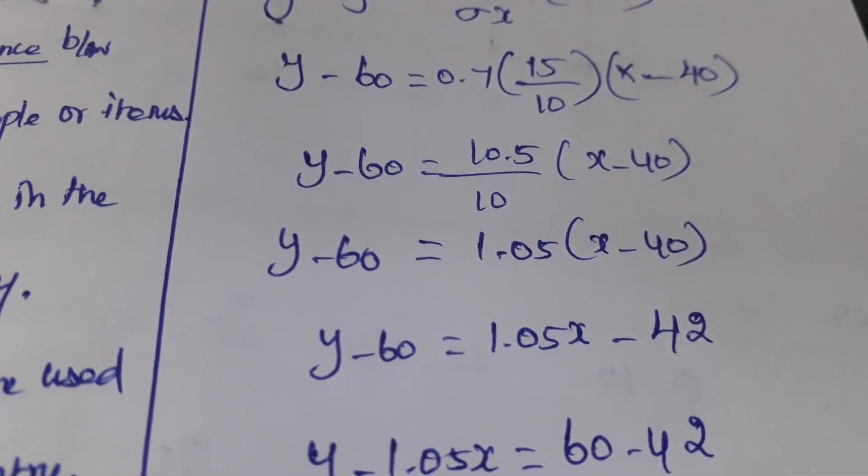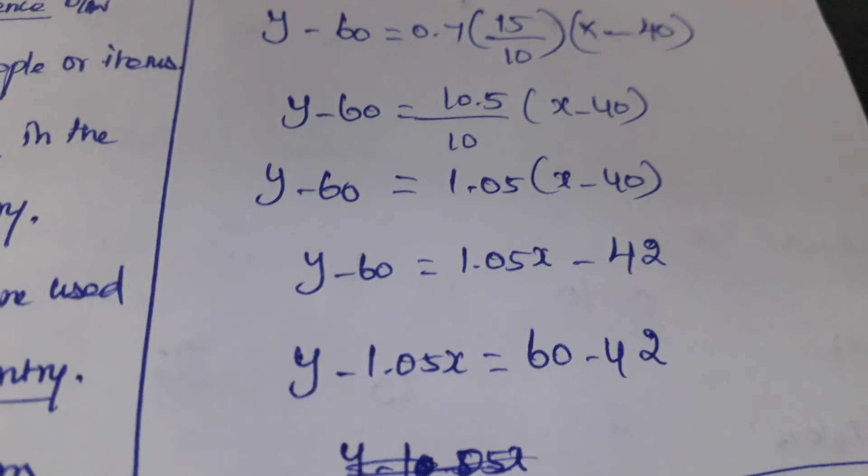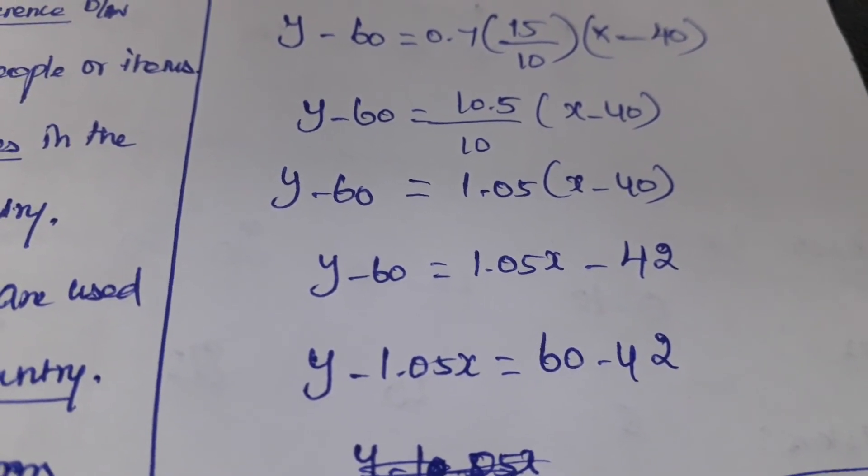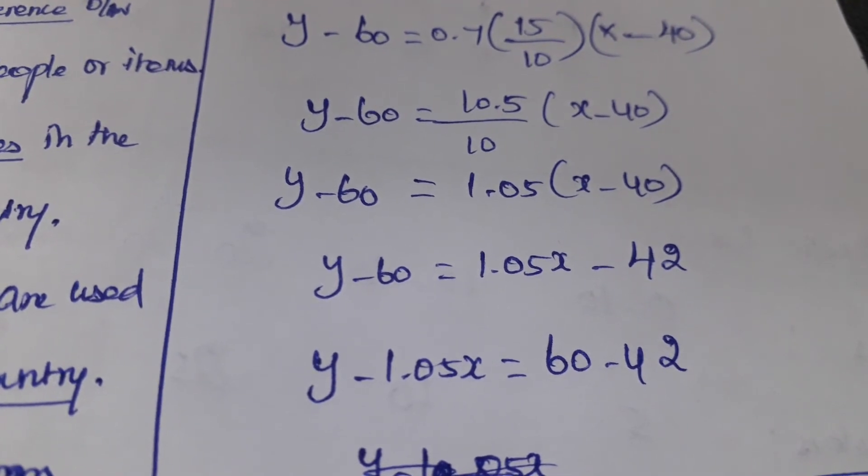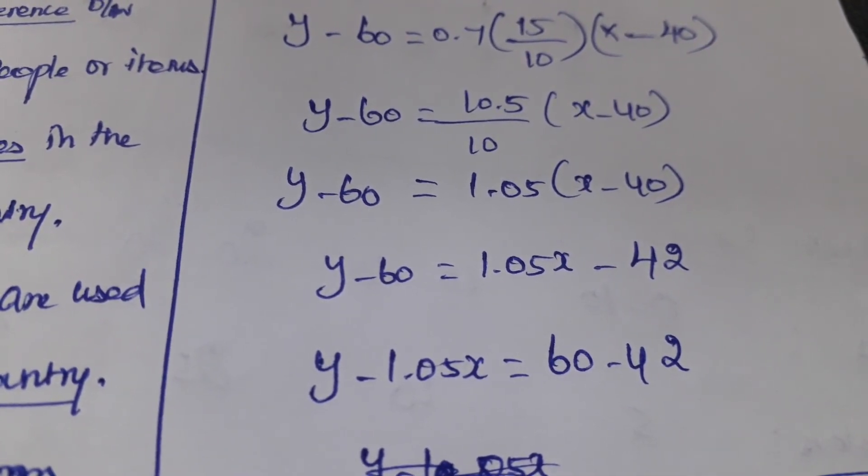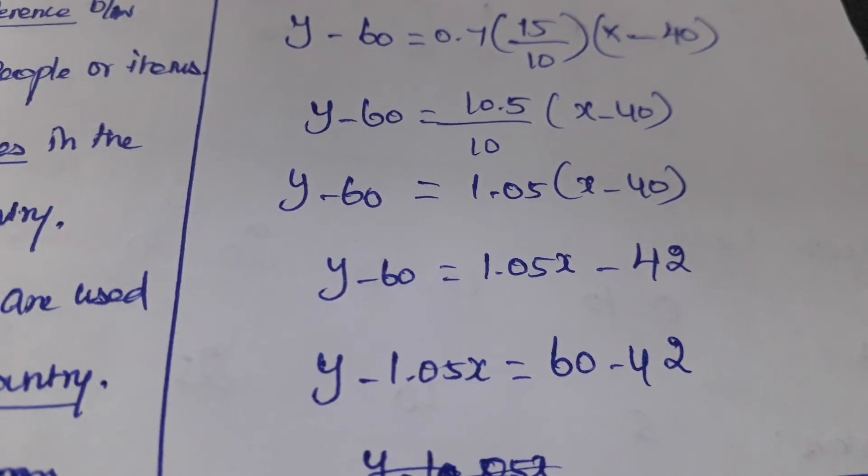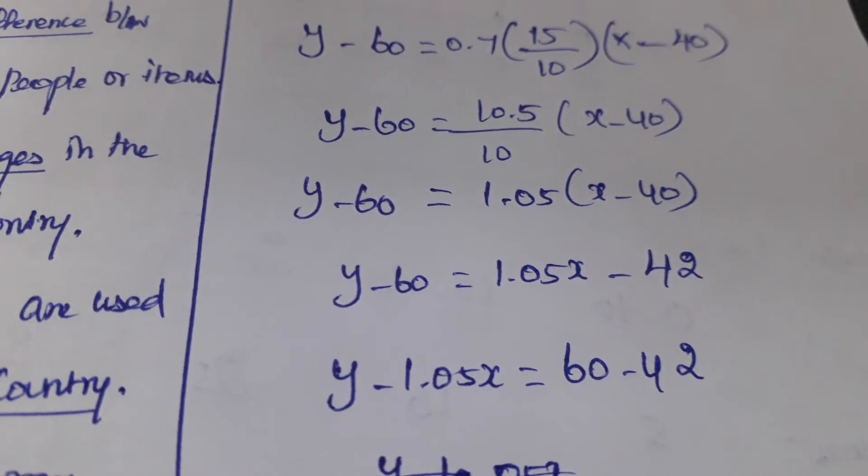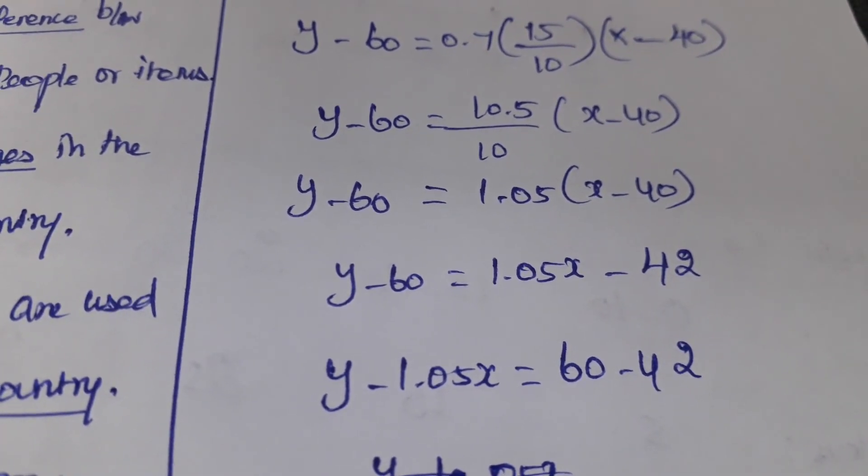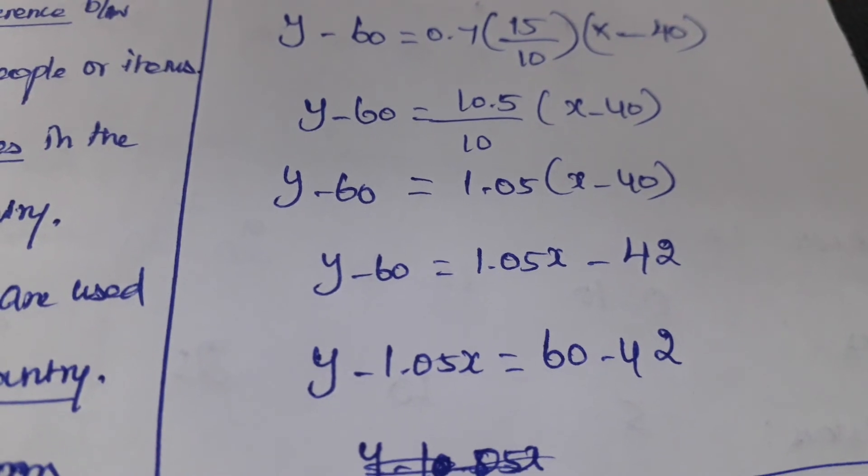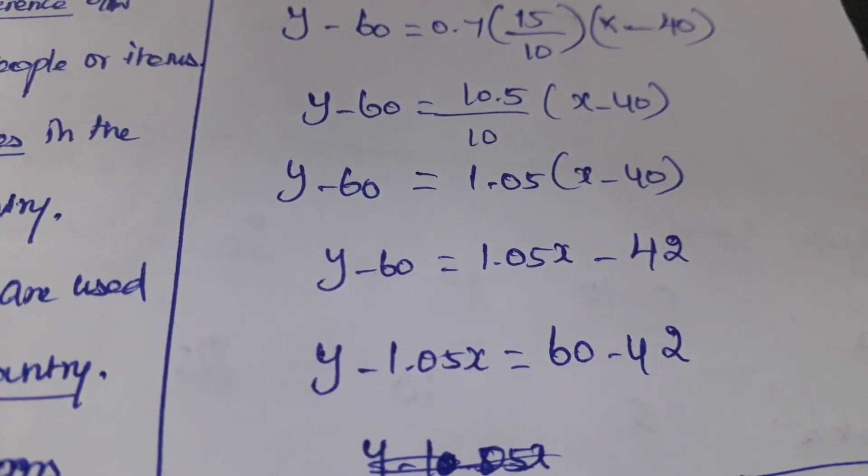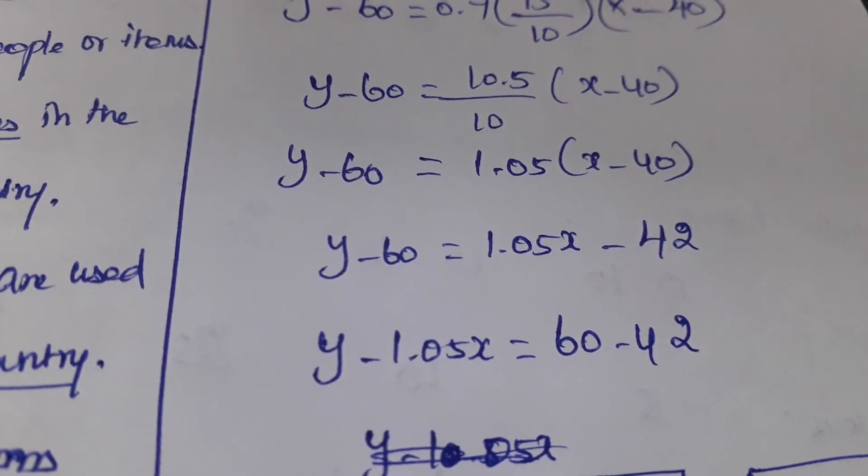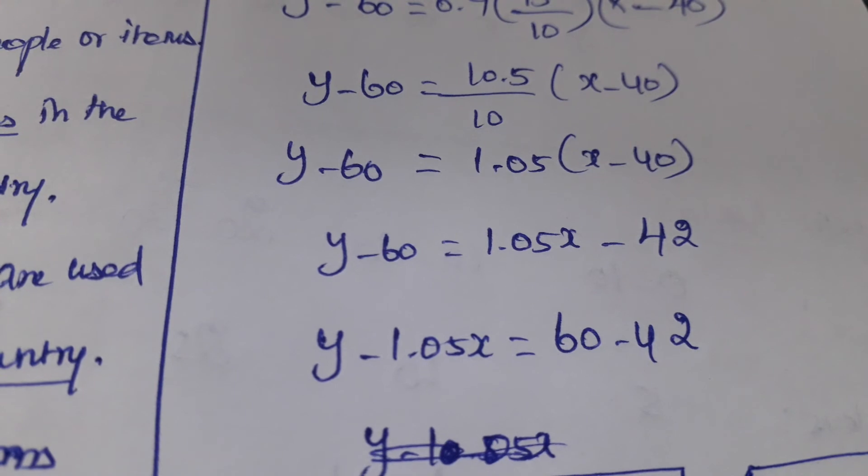Then we need to rearrange the equation. Y minus 1.05X equals, now from left hand to right hand when it comes there's a simple interchange change. Y minus 1.05X equals 60 minus 42. If we subtract 60 minus 42 we get 18.